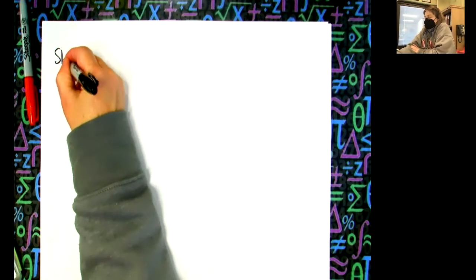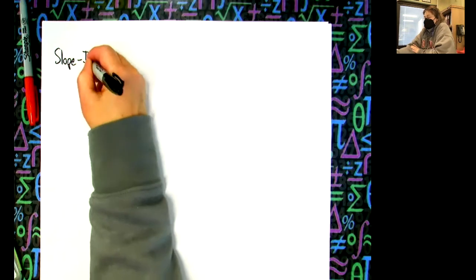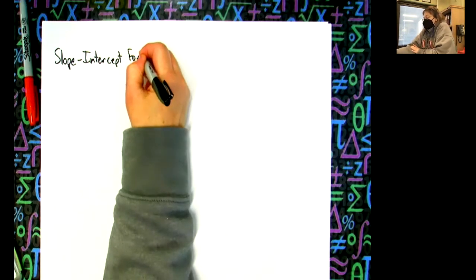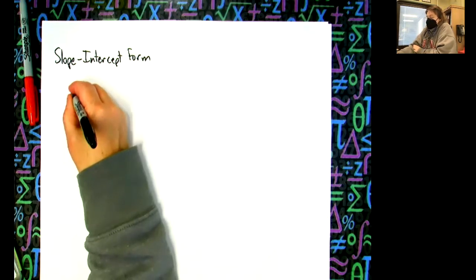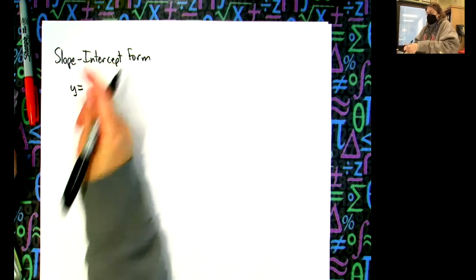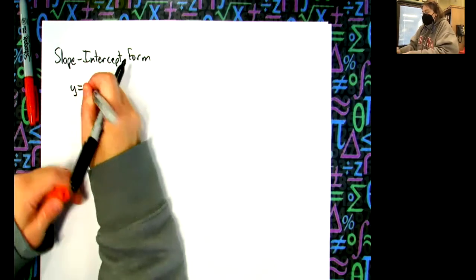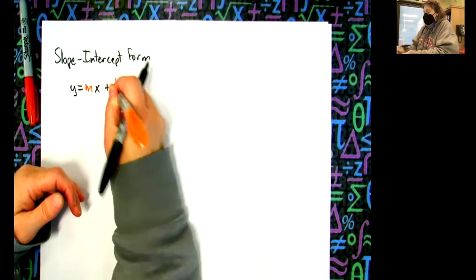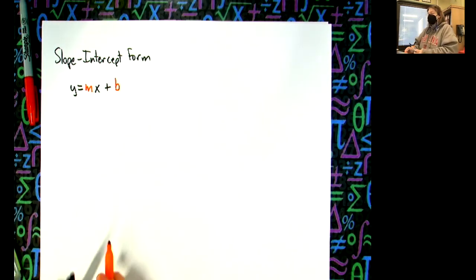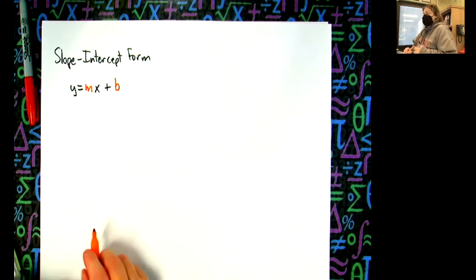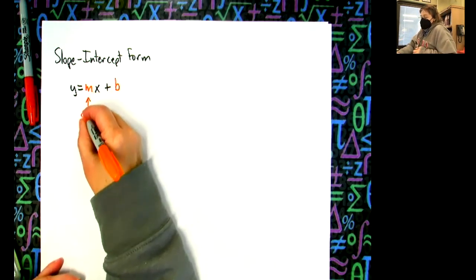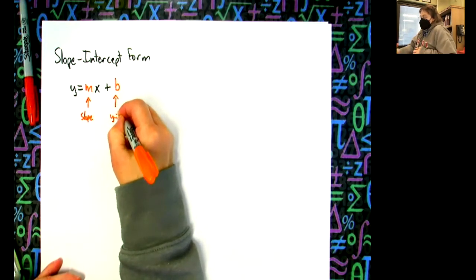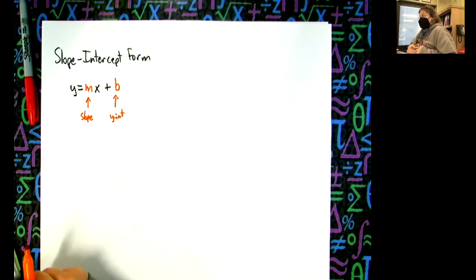Slope-intercept form is the one that you all love because that's the one that we drill over and over. So slope-intercept form is y equals mx plus b — I'm going to color code m. That number right there is the slope and that number right there is the y-intercept. We are good with that one, right? That's the one that everyone knows.